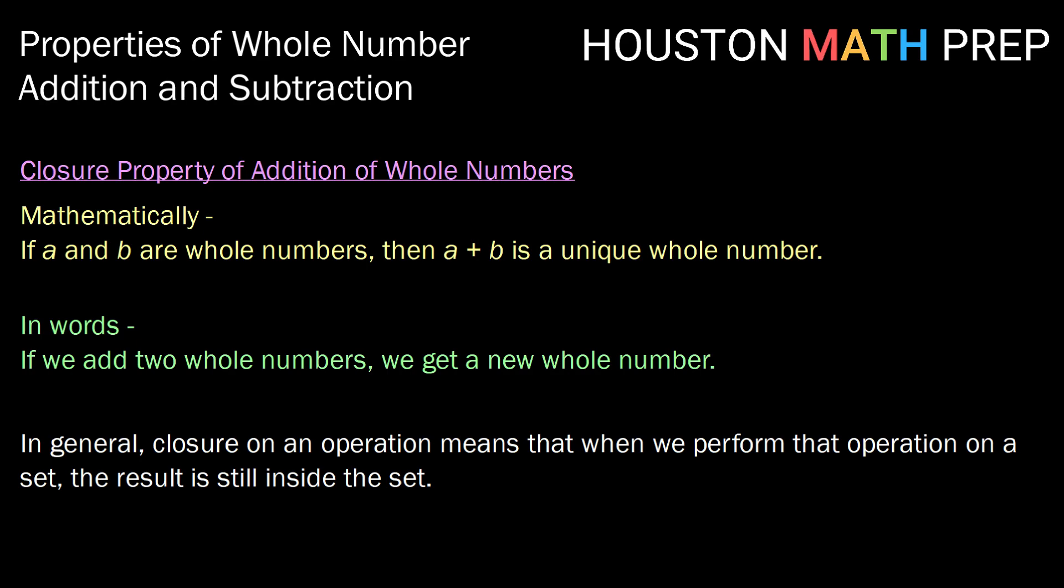In general, closure on an operation means that when we perform that operation on two elements of a set, we get a result that is still inside the set. We have a whole video on showing closure on addition for different sets, so check that out if you want to see more of that.